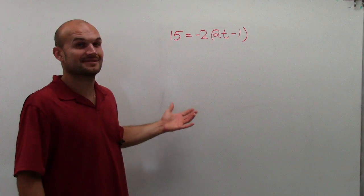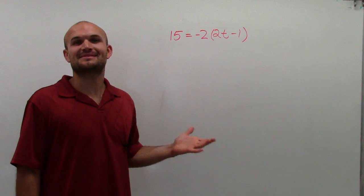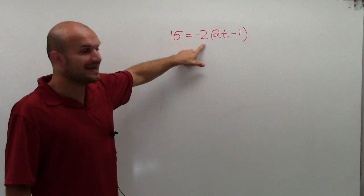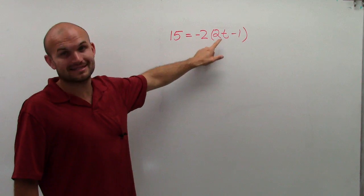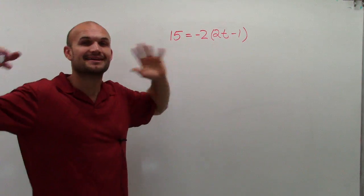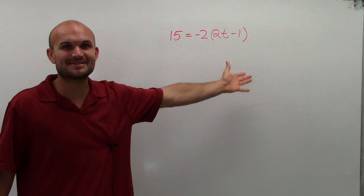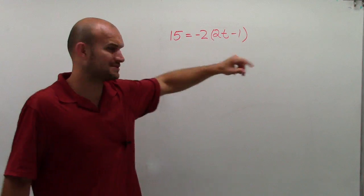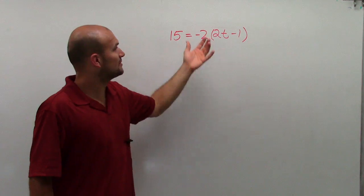So the first thing I notice up here is no wonder it can be confusing sometimes for students when I write 15 equals negative 2 like this and then I write times a 2 that looks like this. Sorry, I don't mean to confuse you. Those are just two different ways to write a 2 and for some reason I decided to write two different versions of a 2. My apologies, but those are both 2.